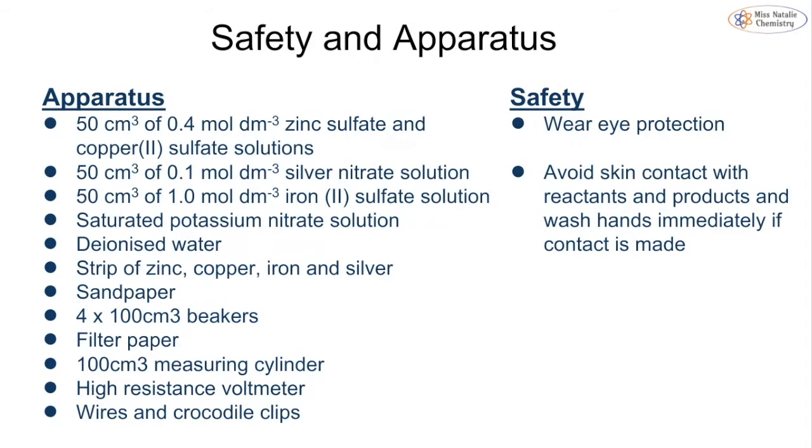When we're carrying out this experiment, what do we need? We have our strips of metal, and in this case we're going to be using zinc, copper, iron, and silver. And then we use different solutions of salts containing these metals: zinc sulfate, copper sulfate, silver nitrate, and iron sulfate. We then have our potassium nitrate solution, and that's going to be used in our salt bridge. And then we need things like beakers, filter paper, our measuring cylinder, our voltmeter, and wires and crocodile clips.